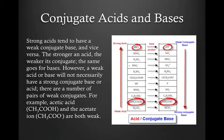However, a weak acid or base will not necessarily have a strong conjugate base or acid, although that's quite common. There are a number of pair of weak conjugates. So, for example, acetic acid and acetate ion are both weak.